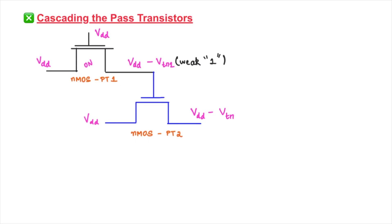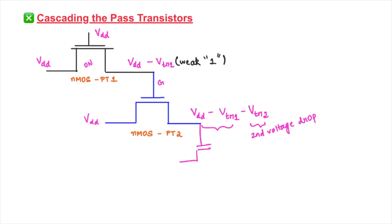VDD minus Vtn1 is not a strong one — it is a weak input voltage — so this weak input voltage is going to turn on the second N-MOS pass transistor. Therefore the second pass transistor will have a second voltage drop of Vtn2. If we continue connecting more subsequent transistors, the voltage drop will continue accumulating with each additional stage.